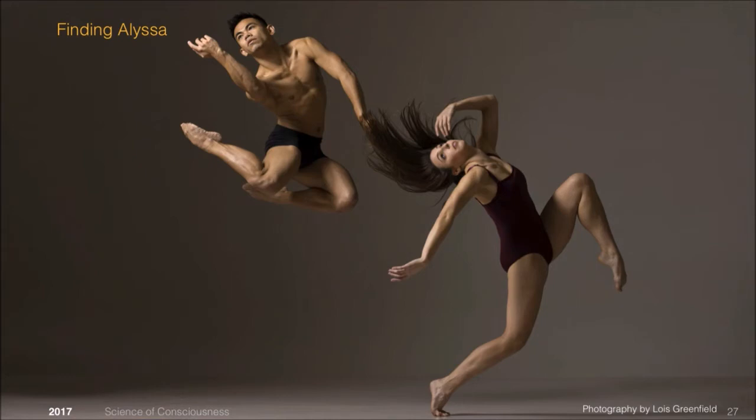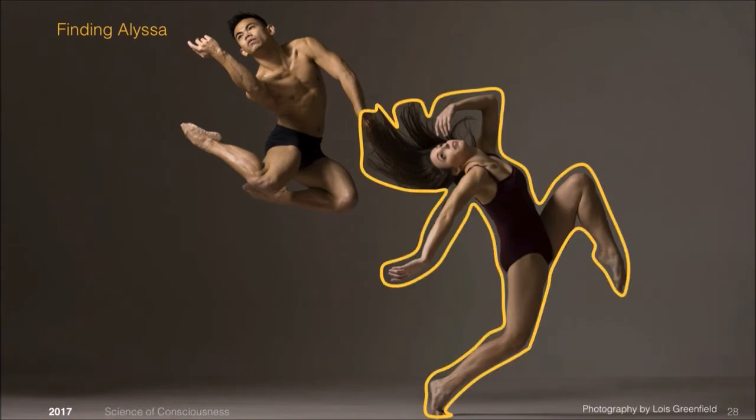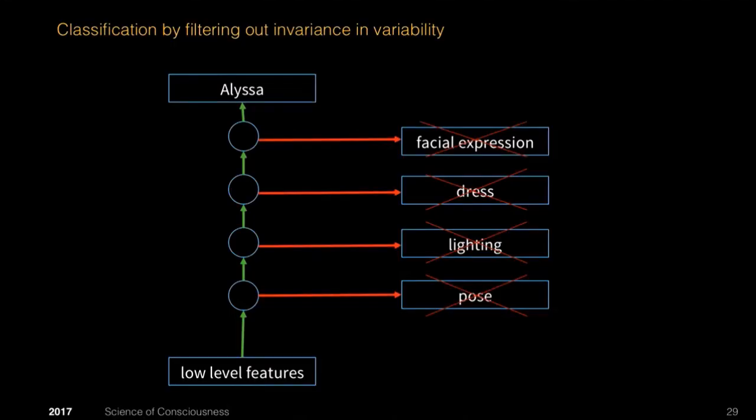The narrow AIs that we have are largely pattern recognizers and object classifiers. For instance, if you want to get such a system to recognize Alyssa, one of the dancers in that image, it means the system has to filter out everything in the image that is not Alyssa, that is variant, to find the invariant. The invariant would be Alyssa. So it tries to filter out the pose, the lighting, the dress, the facial expression, and so on, until only Alyssa is left in all the images that contain her.